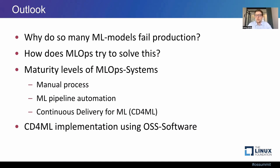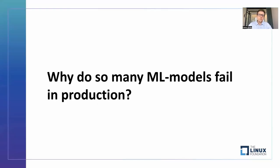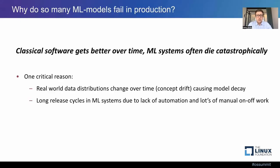So why is it that so many ML models fade in production? I want to argue that classical software typically gets better over time because the engineering teams address bugs and bring out new versions with fewer bugs. But ML systems, in contrast, often die catastrophically. The reason is that models don't work well when the data distributions they are applied on for inference differ too much from training distributions. When distributions in the real world change over time, the models can't handle that. Their performance decays — this is called concept drift.